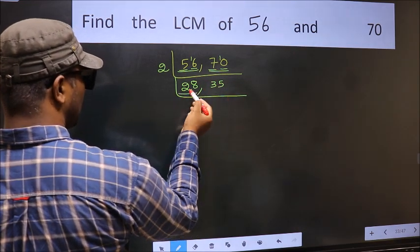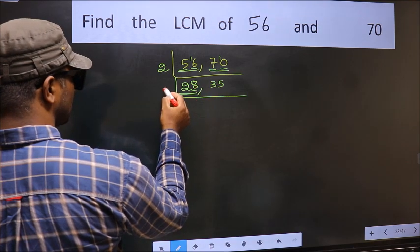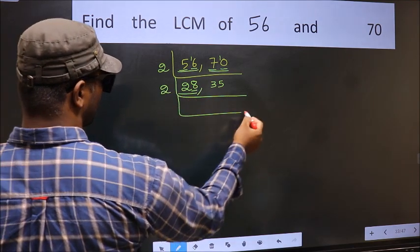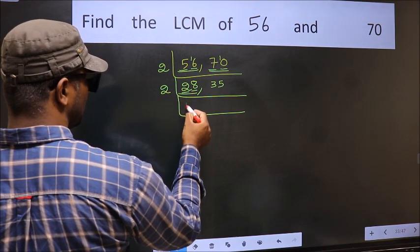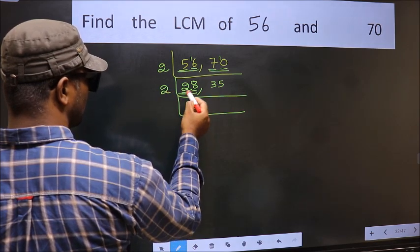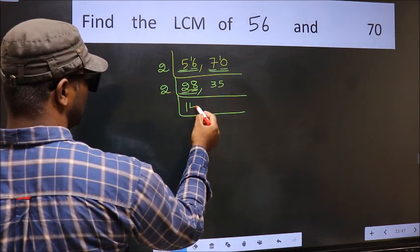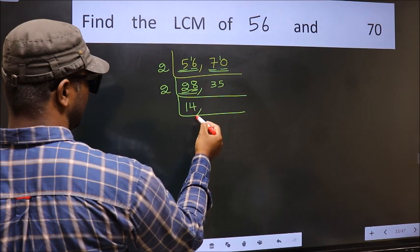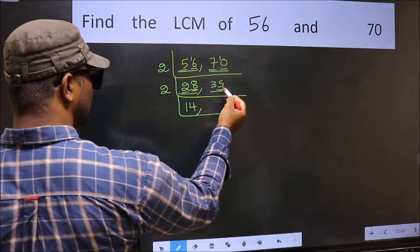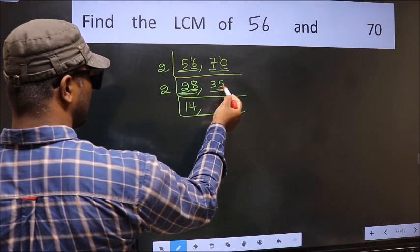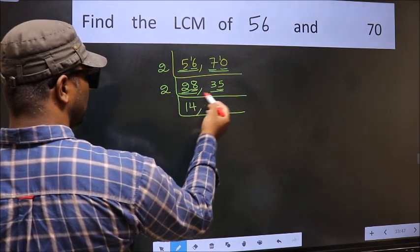Now we have 28 — last digit 8, so take 2. First number 2 — when do we get 2 in the 2 table? 2 times 1 is 2. The other number 8 — when do we get 8 in the 2 table? 2 times 4 is 8. Now the other number 35 — last digit 5, so this is not divisible by 2.